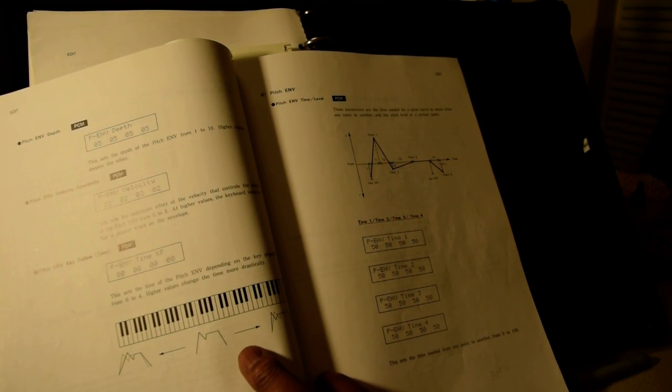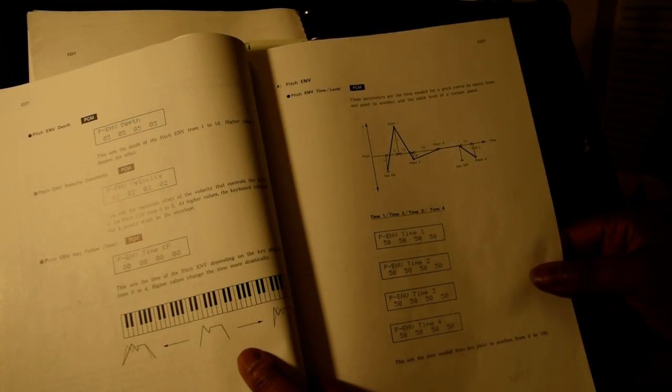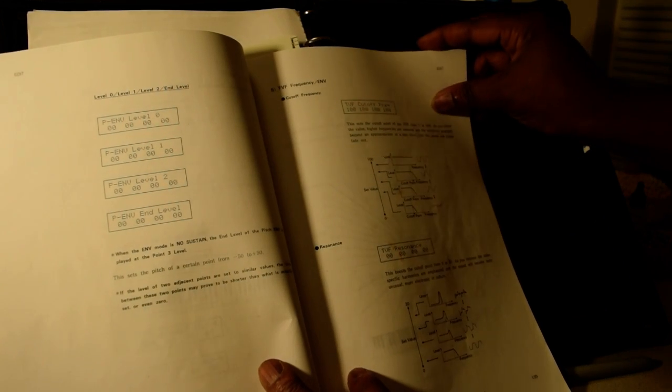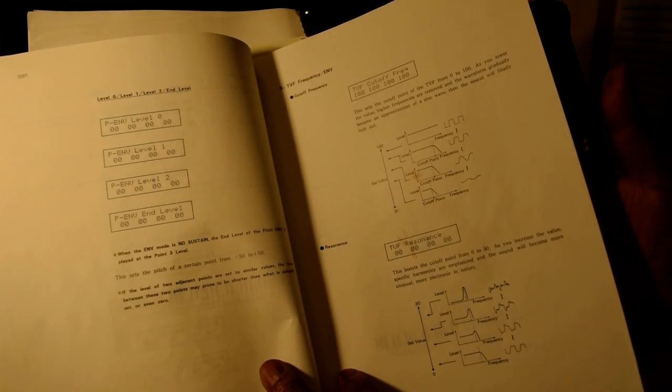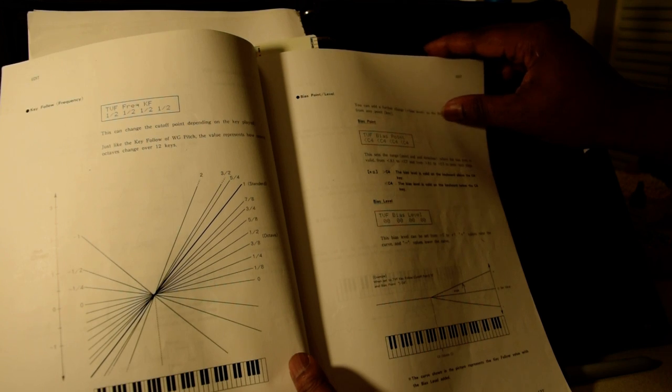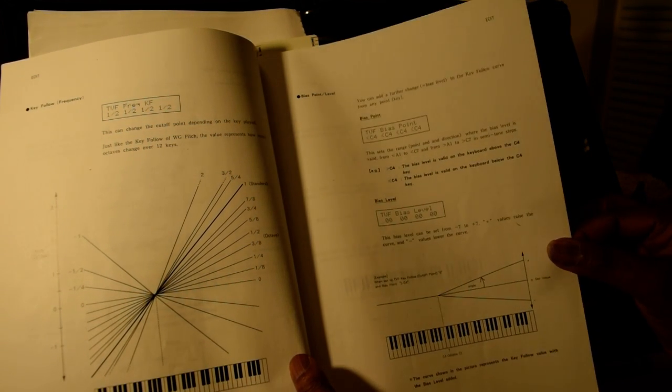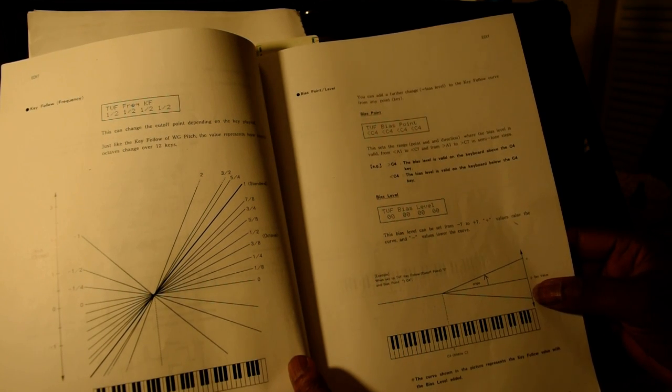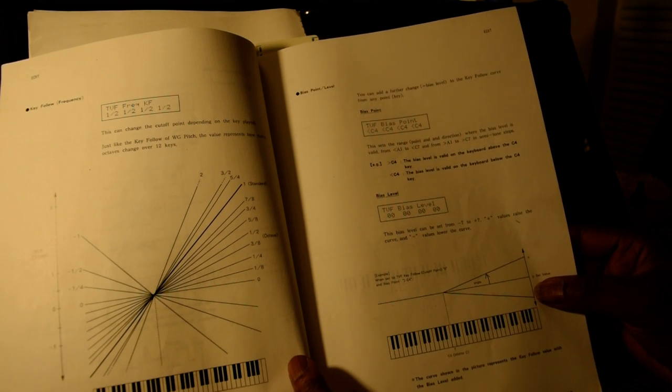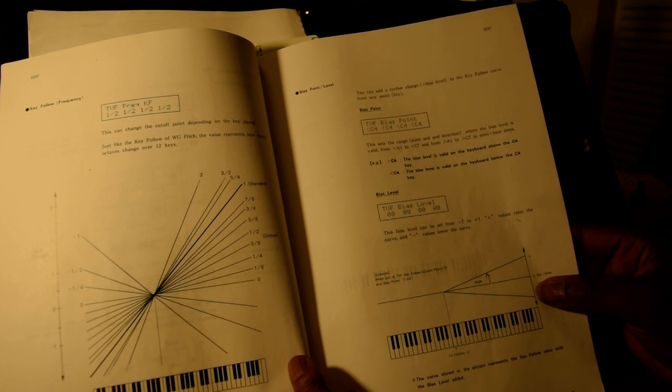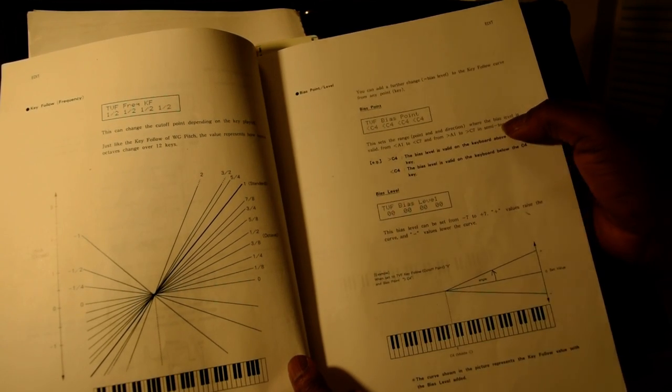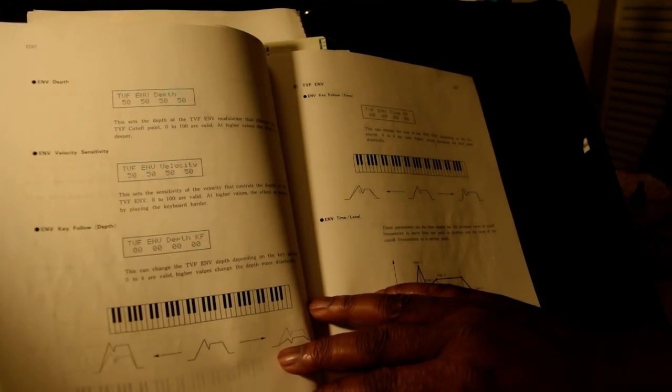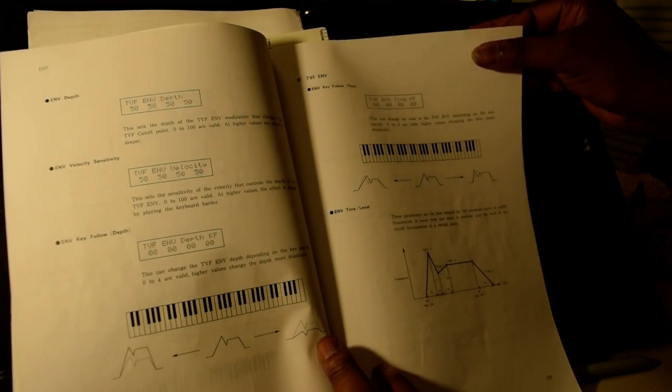Now I'm just going to show y'all some little parts of the book right now. Pitch envelope, TVF frequency envelopes, resonance, key follow frequency TVF frequency, the TVF bias points. The bias points, this says the range point and direction where the bias level is valid from less than A1 to less than C7 and from greater A1 to greater C7 in semi-tones. This is the TVF bias point and the TVF bias level. This is the envelope depth, the TVF envelope.